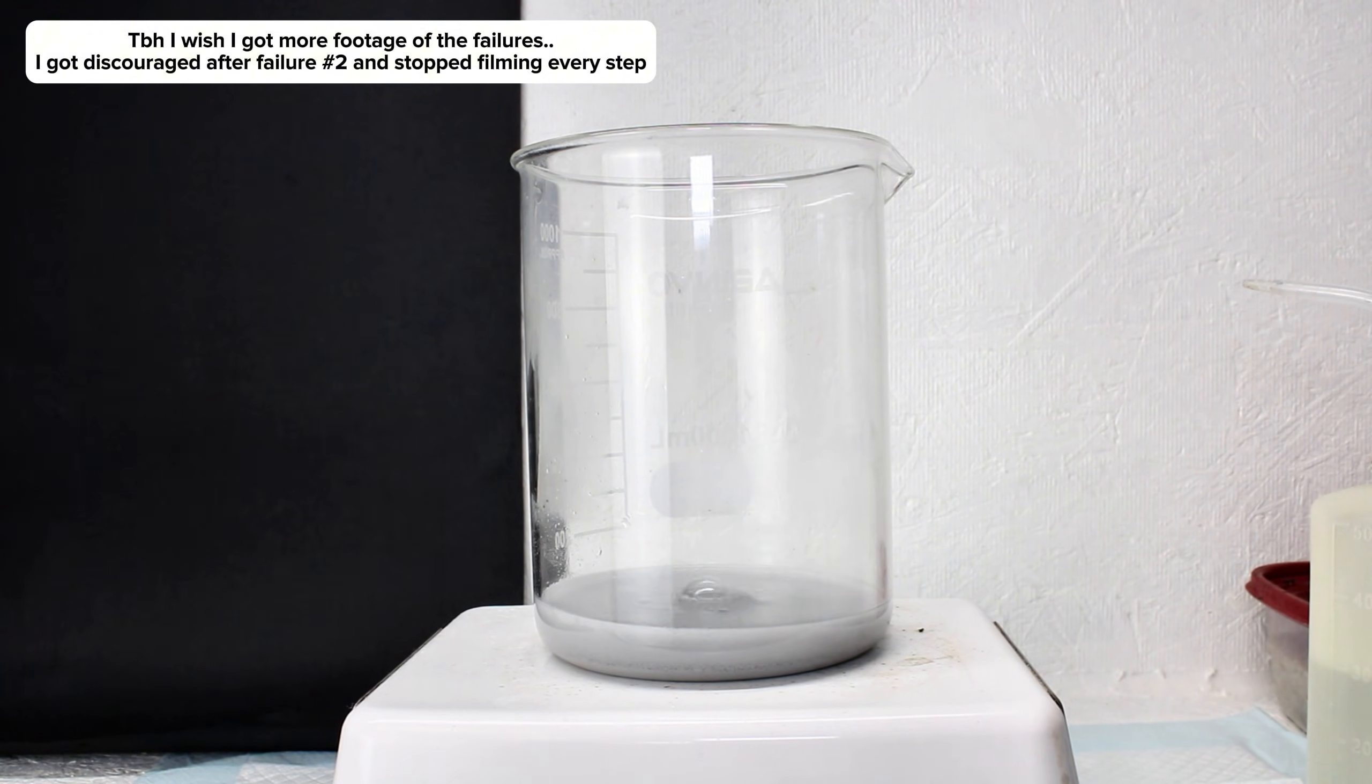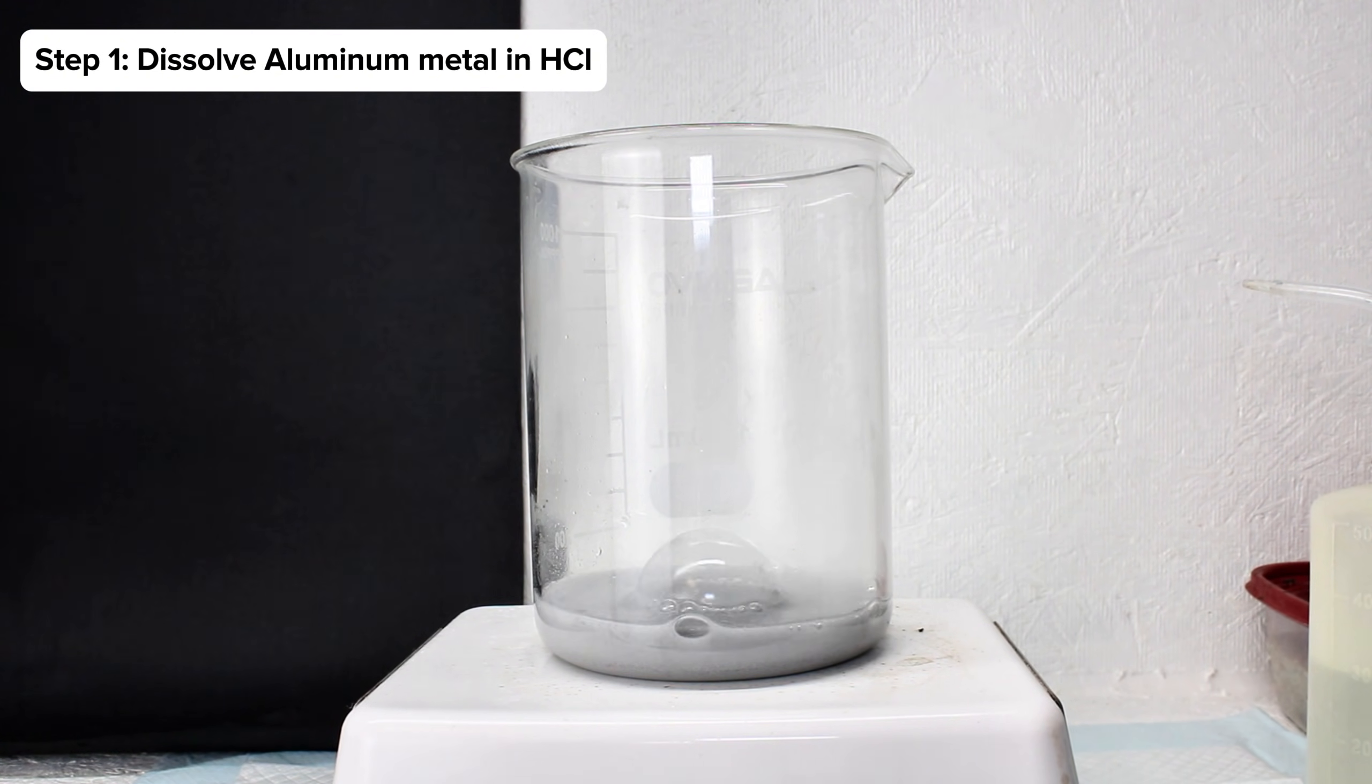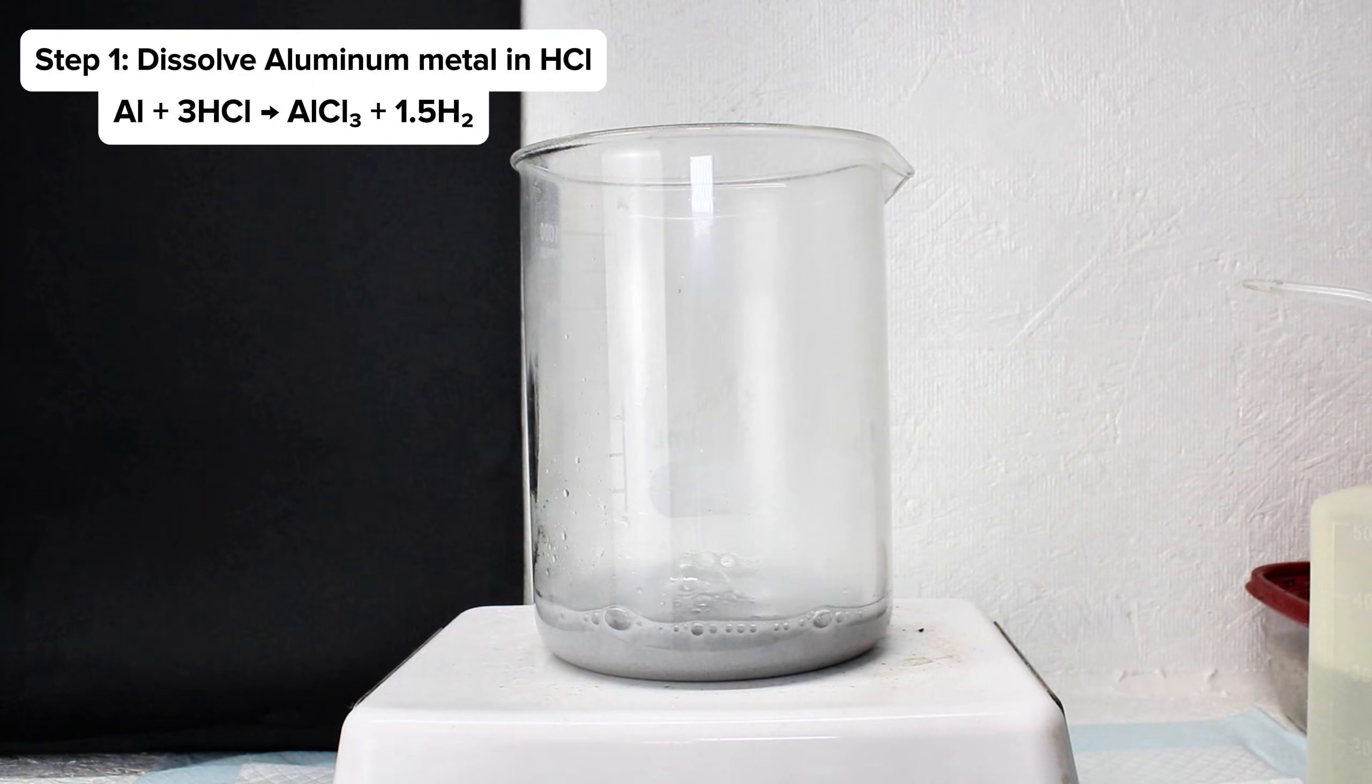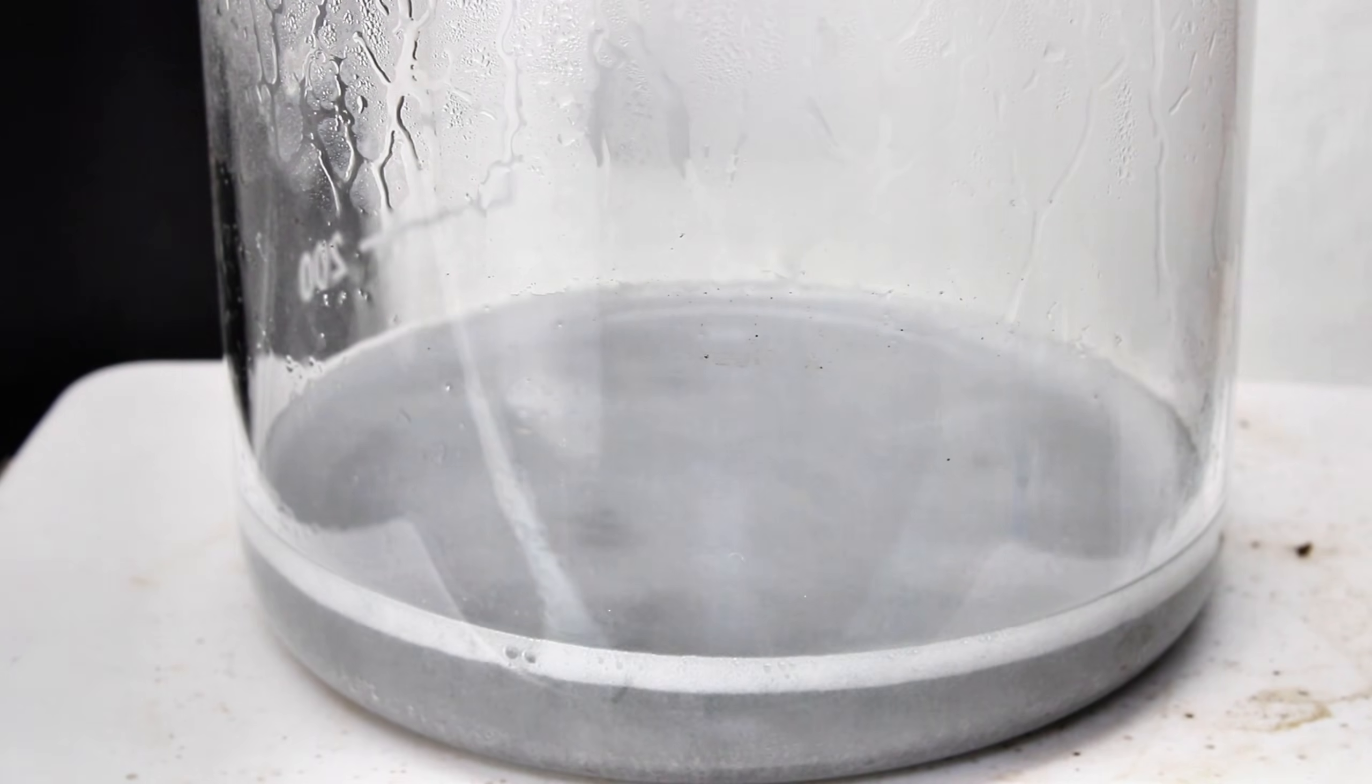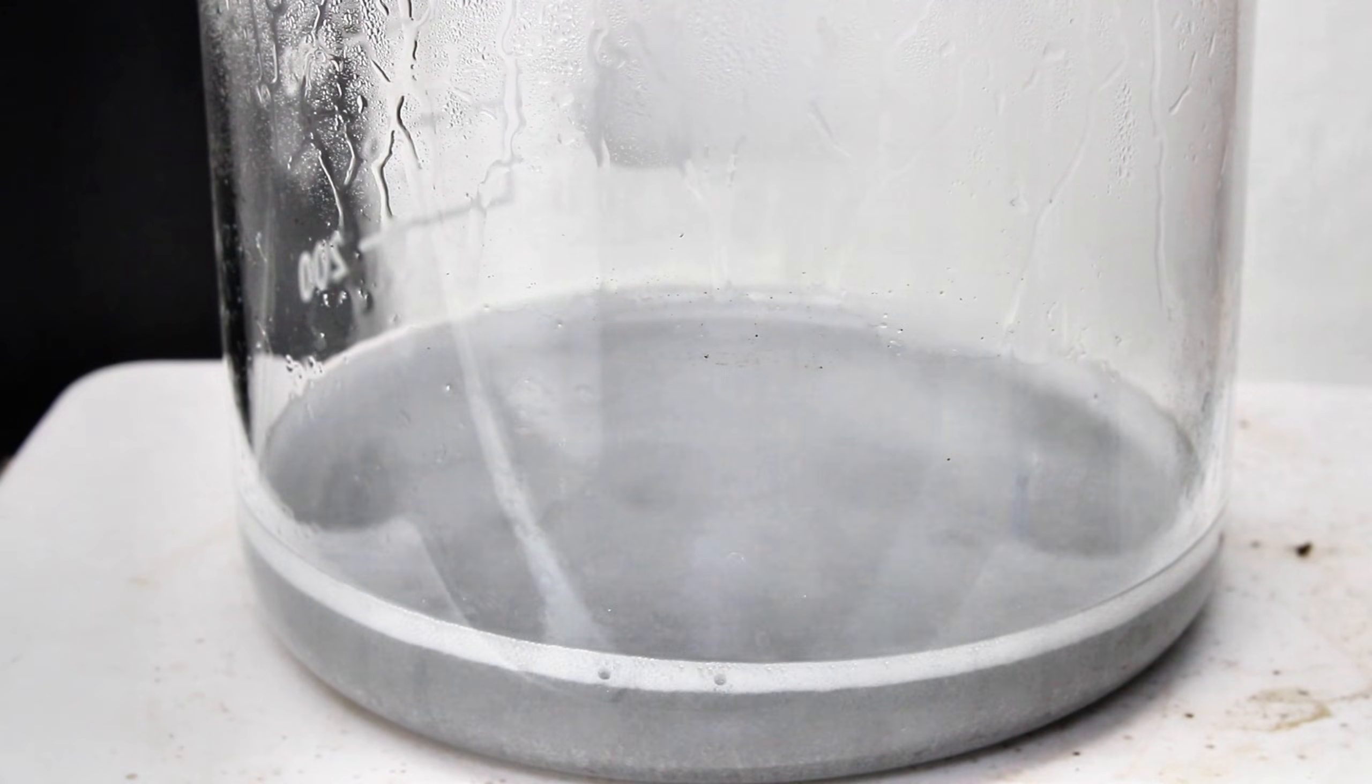For each of my attempts, I began by dissolving aluminum in hydrochloric acid to form the soluble salt aluminum trichloride. This particular reaction tends to be incredibly aggressive, and so it's best to use an excessively large beaker to prevent it from boiling over. Once the aluminum was completely dissolved,